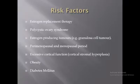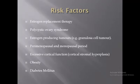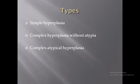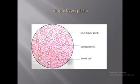All these risk factors can be classified as consequences of unopposed estrogen. There are various types of endometrial hyperplasia: simple hyperplasia, complex hyperplasia without atypia, and complex atypical hyperplasia.